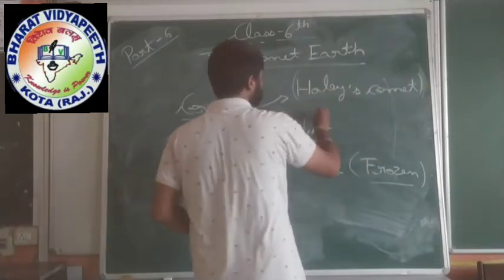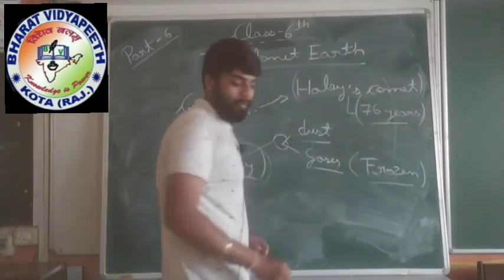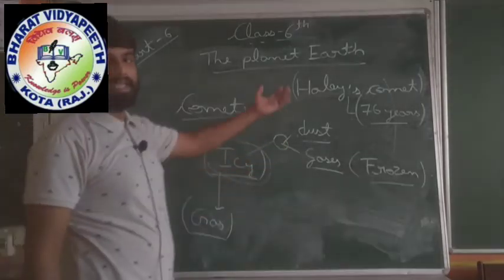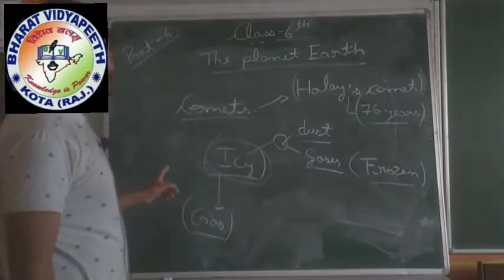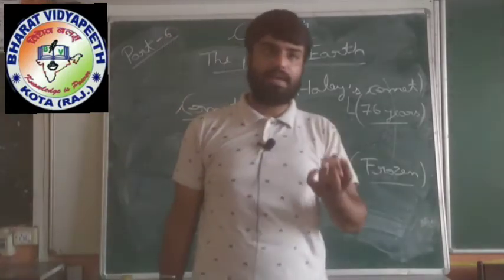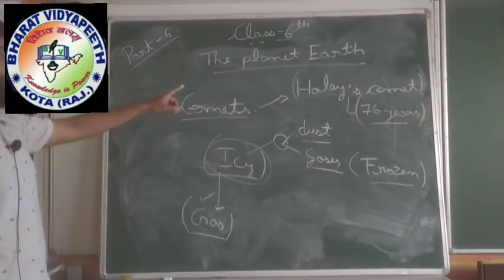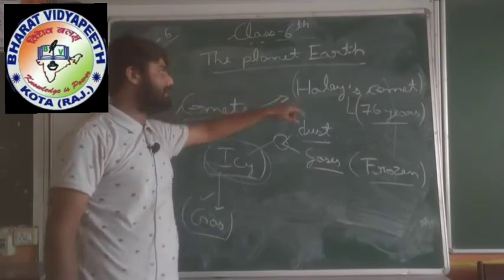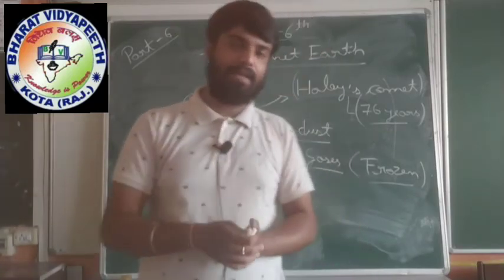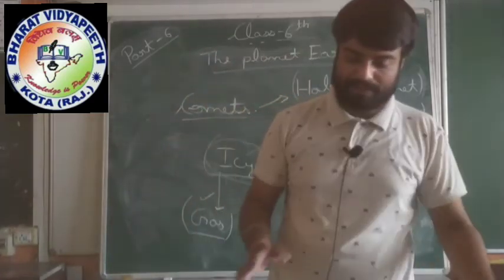Halley's Comet appears near the Sun every 76 years. The most important comet to remember is Halley's Comet, which repeats every 76 years in the sky. If it is visible today, it will appear again 76 years from now.